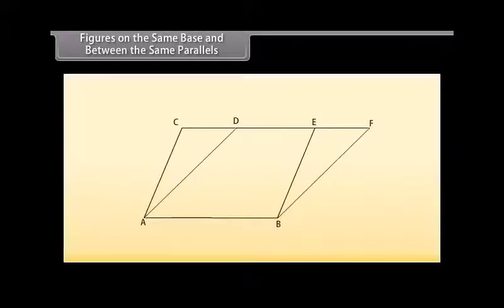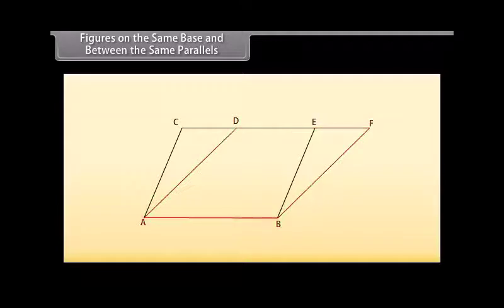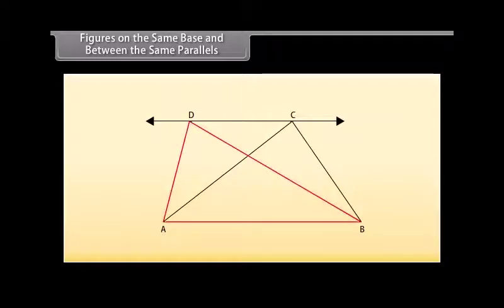Figures on the same base and between the same parallels. Now look at this figure. We can see that parallelogram ABEC and parallelogram ABFD are on the same base AB. Also, the vertices C and E of the parallelogram ABEC opposite to AB, and vertices D and F of the parallelogram ABFD opposite to AB, lie on the same line CF which is parallel to AB. So we can say that both the parallelograms lie on the same base AB and between the same parallels AB and CF. Similarly, in this figure the triangles ADB and ACB both lie on the same base AB and between the same parallels AB and DC.